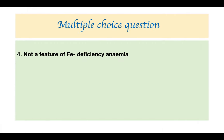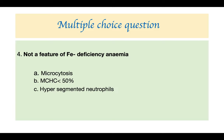Which is not a feature of iron deficiency anemia? Microcytosis — definitely a feature. MCHC less than 30 (hypochromia) — a feature. Hypersegmented neutrophils — not a feature; this is a feature of megaloblastic anemia. Increased TIBC — a feature of iron deficiency anemia. So the answer is hypersegmented neutrophils.